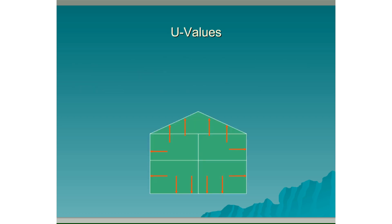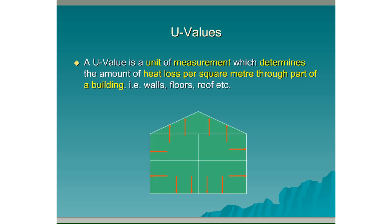U values. A U value is a unit of measurement which determines the amount of heat loss per square meter through part of a building — for example through walls, floors, roofs etc. Heat is generated within the house, and we lose heat through the walls, the floors and the roof.